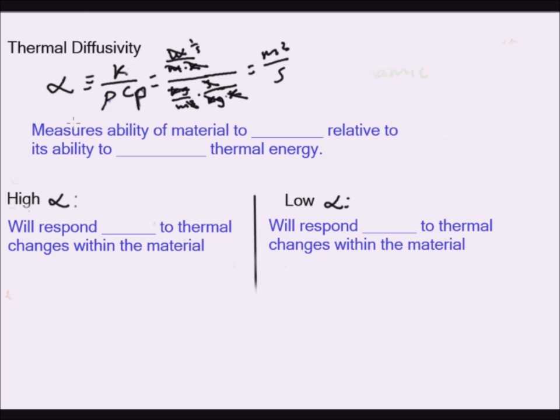As I said before, the thermal diffusivity measures the ability of a material to conduct, via conduction, to conduct thermal energy, relative to its ability to store thermal energy. And so systems or materials with a high thermal diffusivity will respond quickly to thermal changes within the material, whereas materials with a low thermal diffusivity will respond more slowly, or sluggishly.